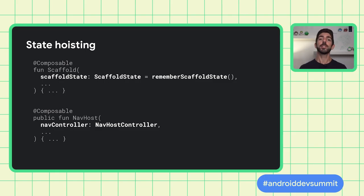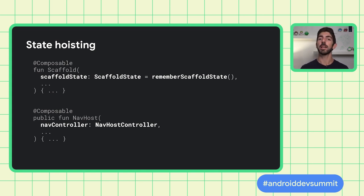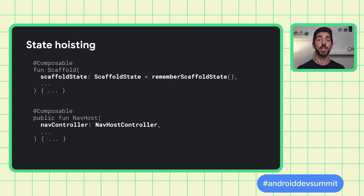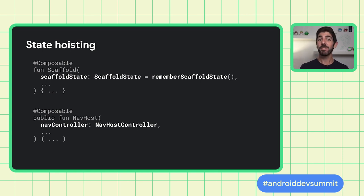State Hoisting is a pattern widely used in Compose. You can see it in most Compose APIs as a way to intercept and control the state used internally by UI elements. As intercepting state is optional, default parameters are a powerful language construct. For example, if you need to control or share scaffold state, you can pass the state in; otherwise, it is created by default.